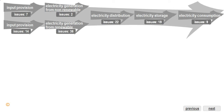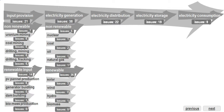We can zoom in further to see that some parts of the supply chain split into parallel activity systems — for example, generation from non-renewable and renewable resources, or input provision for each of those. By drilling even further, we can unpack all the subcategories of the non-renewable and renewable input provision or electricity generation. So non-renewable electricity generation would split into nuclear, coal, oil, or natural gas. Renewable electricity generation into solar, wind, hydro, and biomass.